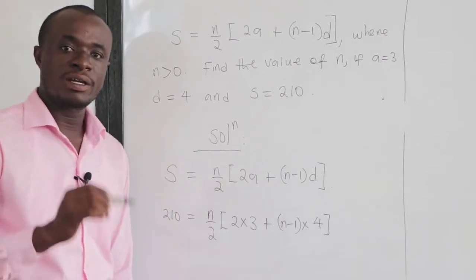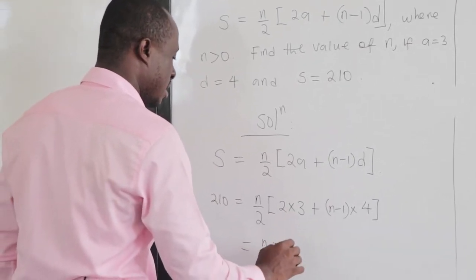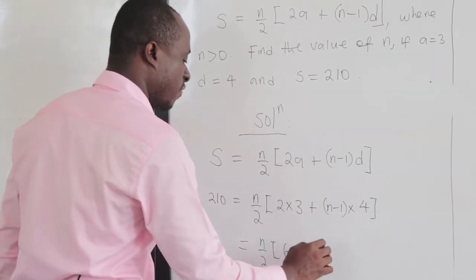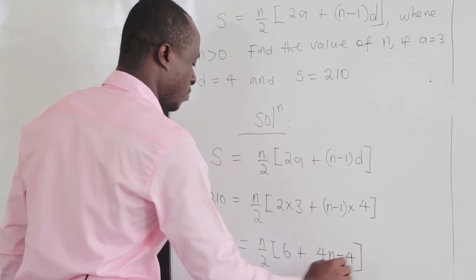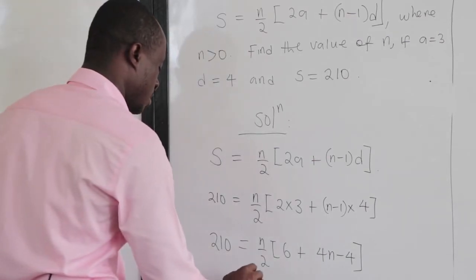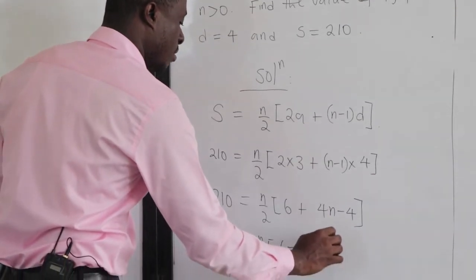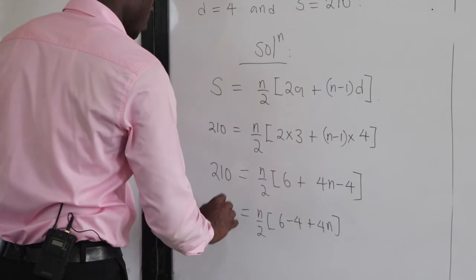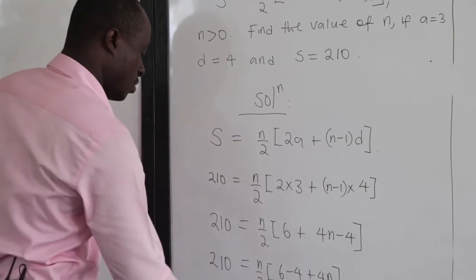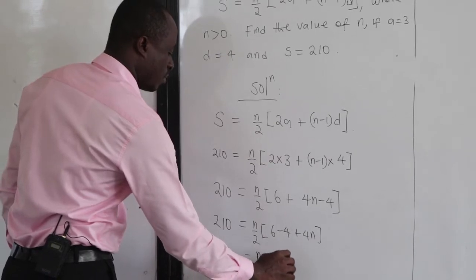From here, we handle the bracket first. So we have n over 2. 2 times 3 is 6. Now, when we distribute using the distributive property, I can get 4n minus 4. So we have n over 2 times 6 minus 4 plus 4n. What is 6 minus 4? That is 2. So we have n over 2 times 2 plus 4n, equals 210.